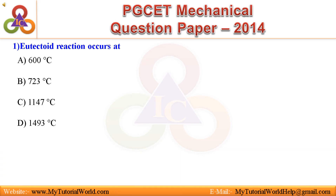Question 1: Eutectoid reaction occurs at — a. 600 degrees Celsius, b. 723 degrees Celsius, c. 1,147 degrees Celsius, d. 1,493 degrees Celsius. Answer is 723 degrees Celsius.